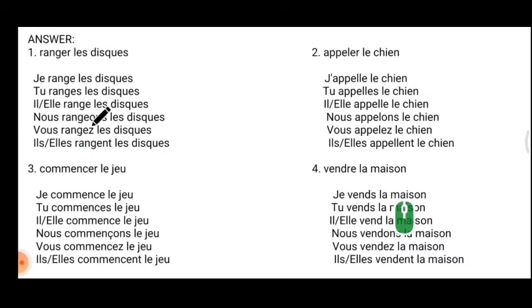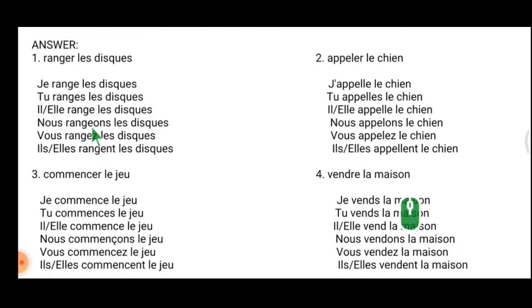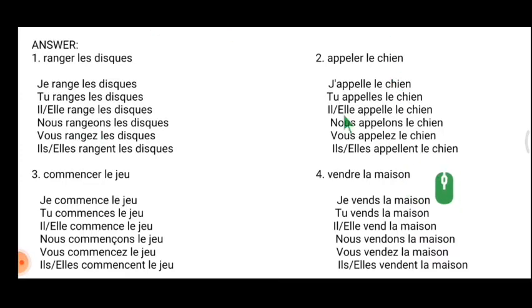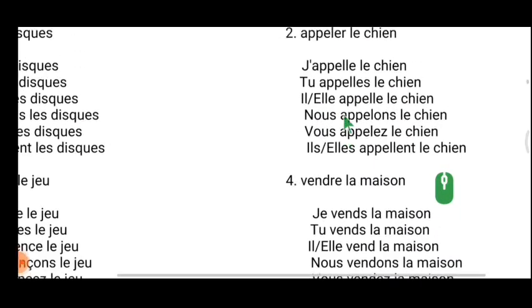'Je range, tu ranges, il range, nous rangeons' — you can see the extra 'e' here. Normally for 'nous' conjugation we just add 'ons,' but this verb is special: when you have 'g' in the verb you must add 'e' before 'ons.' That is the special rule for this verb. The second verb is 'appeler' — this verb is also important.